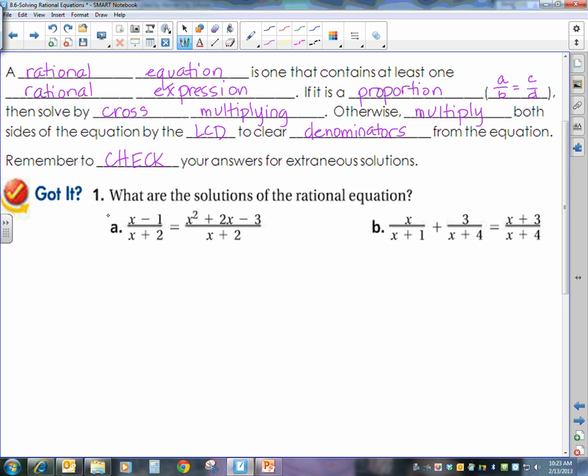Okay, so what are the solutions of the rational equation? We have a over b equals c over d, and normally I would cross multiply, but when I start to look at that, I notice that my denominators are the same. If my denominators are the same, then I can go ahead and put my numerators equal to each other.